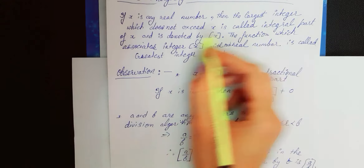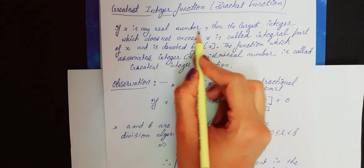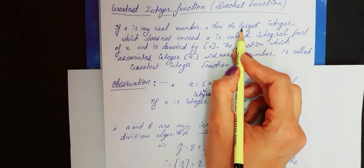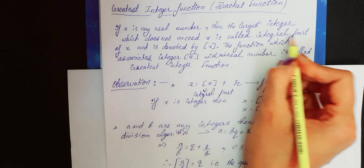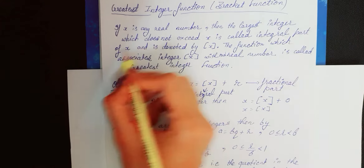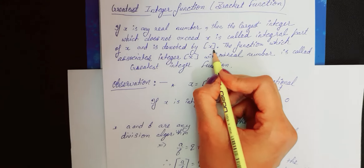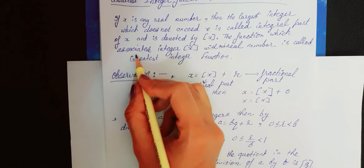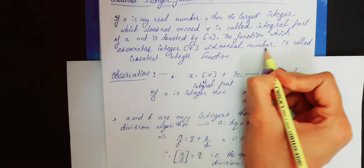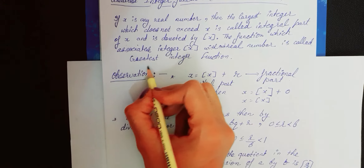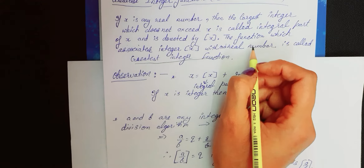Let us start with the definition of Greatest Integer Function. If x is any real number, then the largest integer which does not exceed x is called the integral part of x and is denoted by bracket x. The function which associates the integer [x] with each real number x is called greatest integer function, ya phir hum keh sakte hain bracket function.